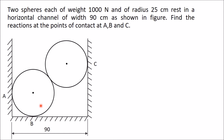These two spheres have weight 1000 Newton and radius 25 centimeter, and the width of this channel is given as 90 centimeter. The points of contact are A, B, and C, and you have to determine reactions at these three points.